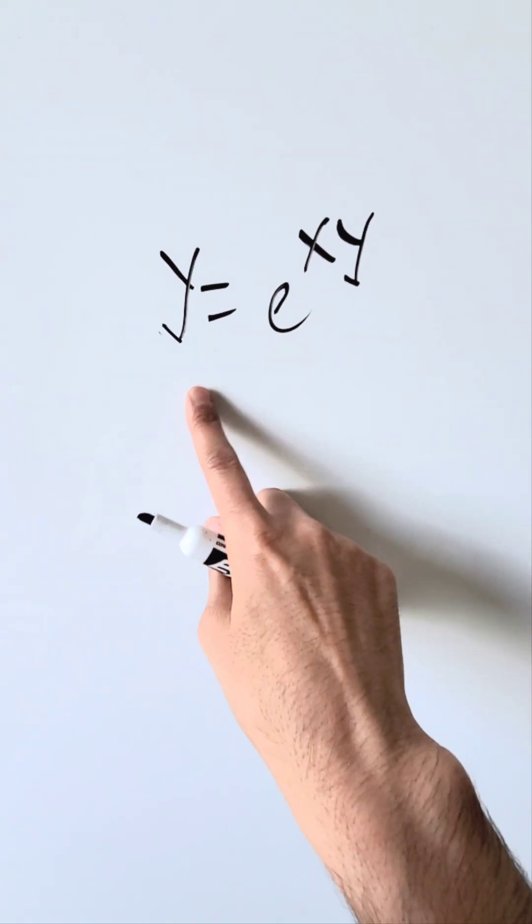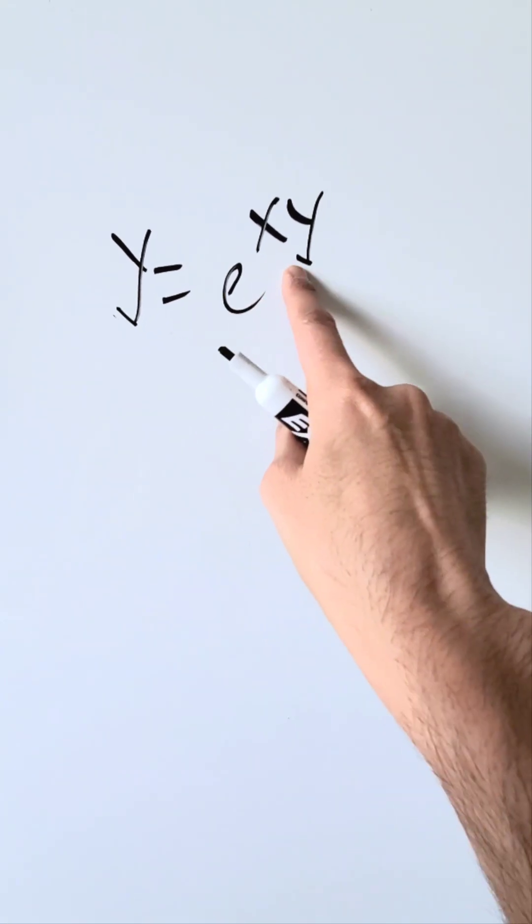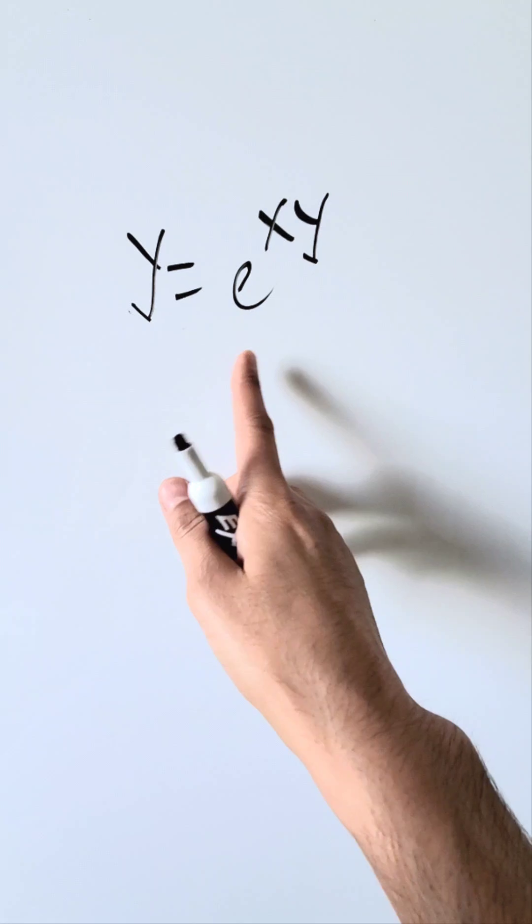I'm looking here at this expression y equals e to the power of xy. How can I determine the derivative of this?